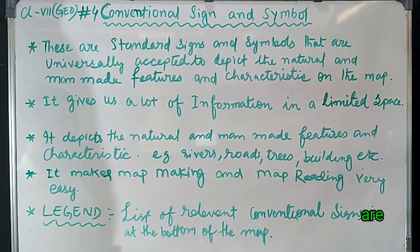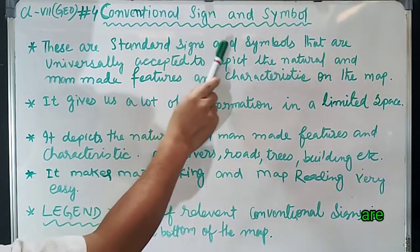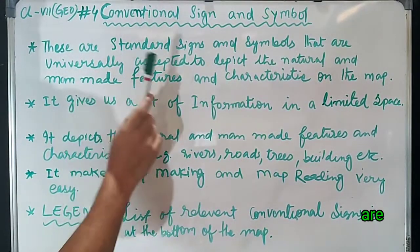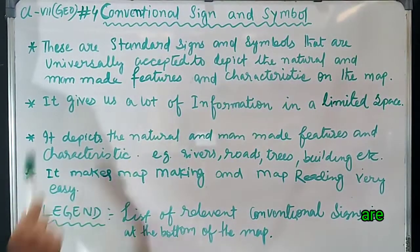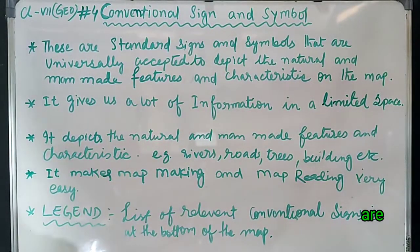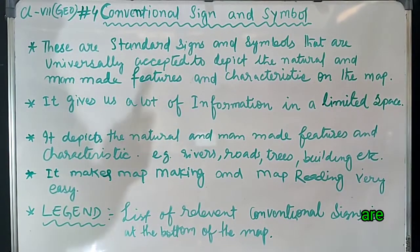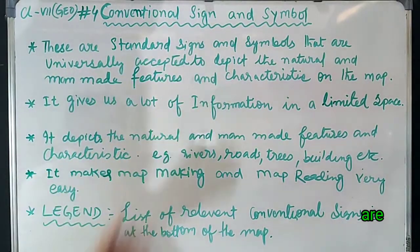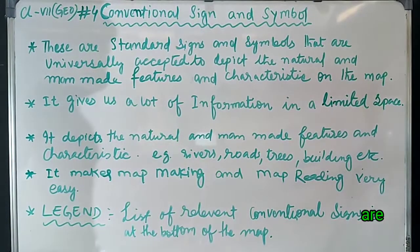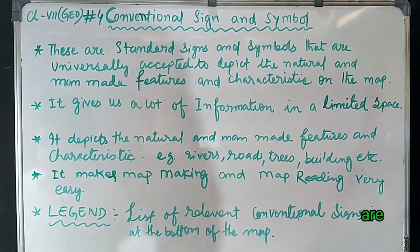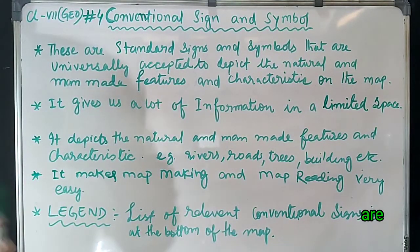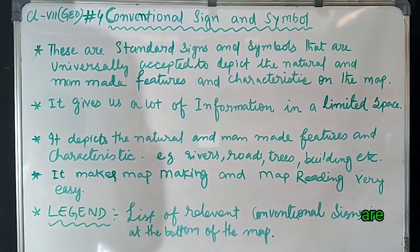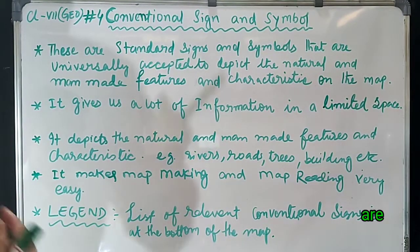Let us begin with the definition of conventional signs. These are standard signs and symbols that are universally accepted to depict the natural and man-made features and characteristics on the map. Conventional signs and symbols are used on the map to show natural and man-made features like buildings, roads, boundaries, mountains, plateaus, etc., in different symbol shapes, shades, and colors.